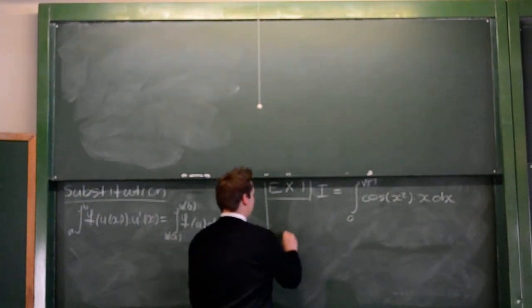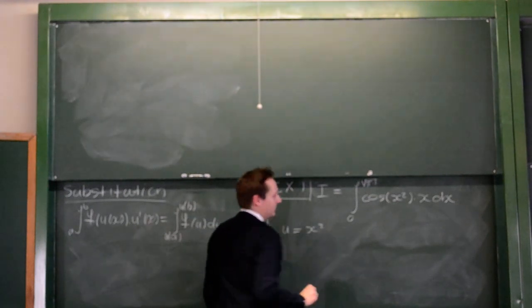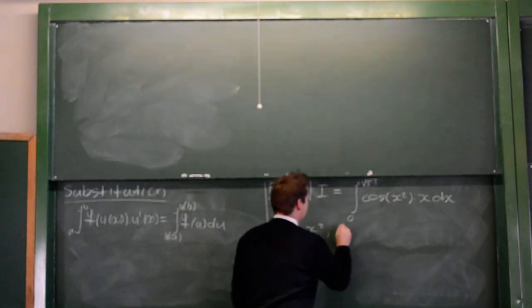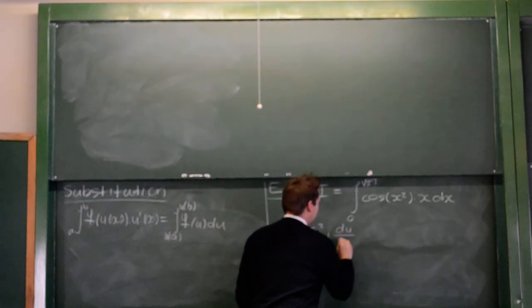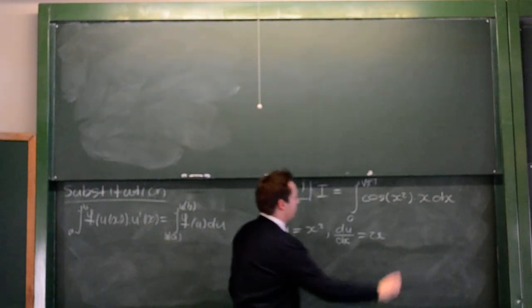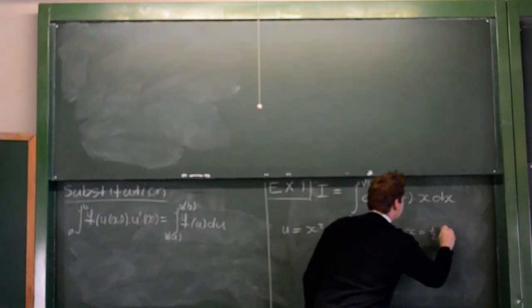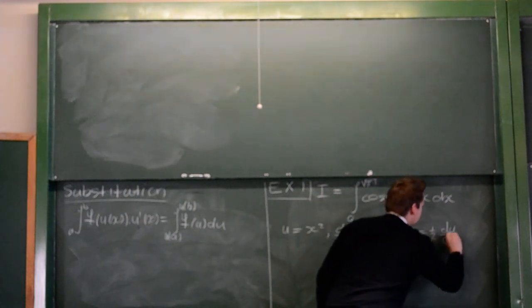So, let's see. If I make u equal to x squared, then du/dx will be 2x, or then x equals a half du/dx.